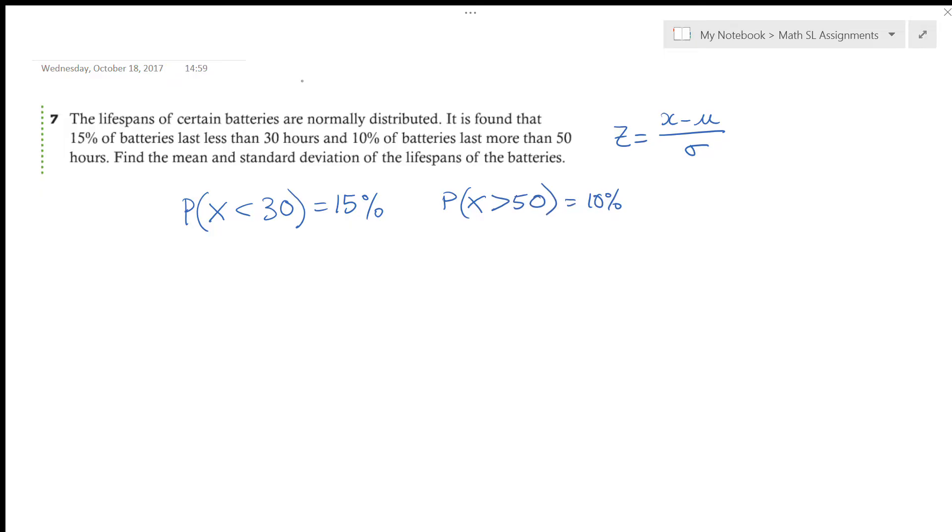Now good practice would say that X is equal to the lifespan of batteries in hours. Okay. So I've got these two different bits of information. What would that look like on a normal distribution curve? Well, I don't know what the mean is. Somewhere in the middle. 15% less than 30. So there's 15% that are less than 30. And there's 10%, a little bit less, that are more than 50. Alright, so my mean is somewhere in between those two things.